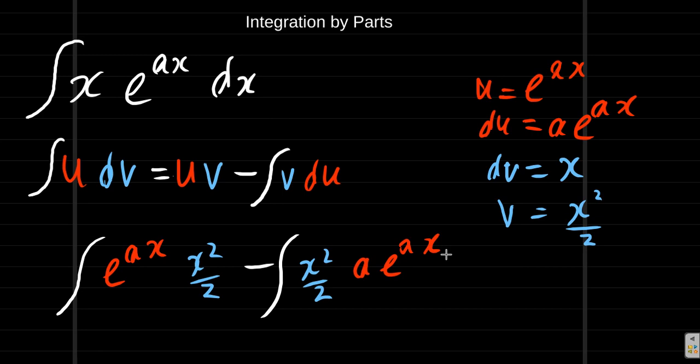You don't want to do that. What you want to do is substitute one of these for u. So when you go from u to du, that means you differentiate, the function becomes simpler.